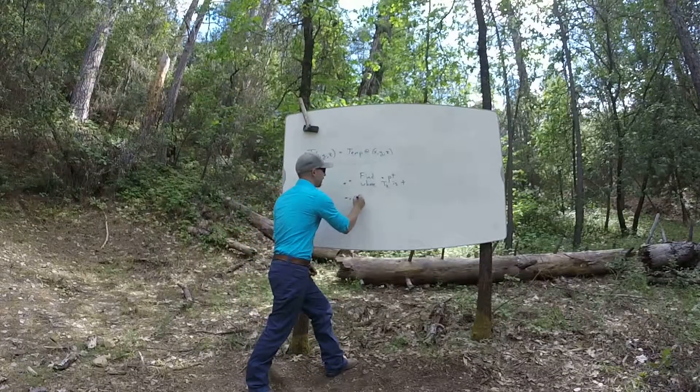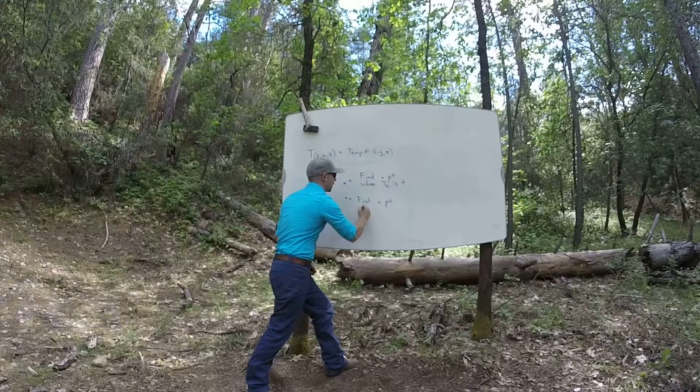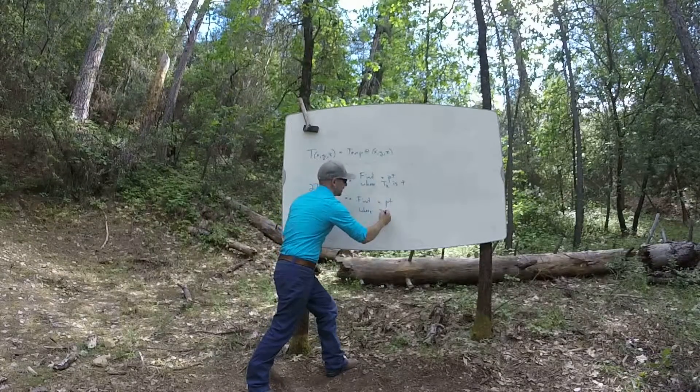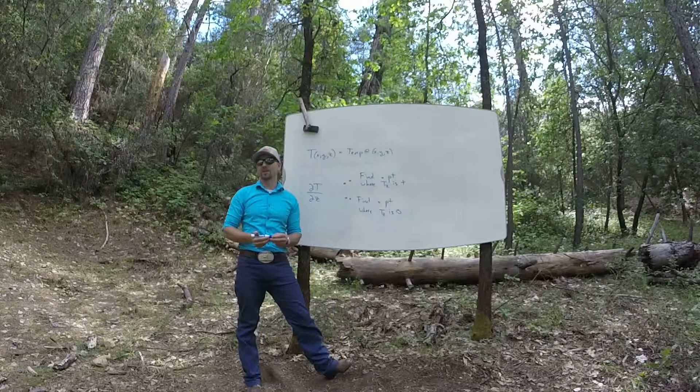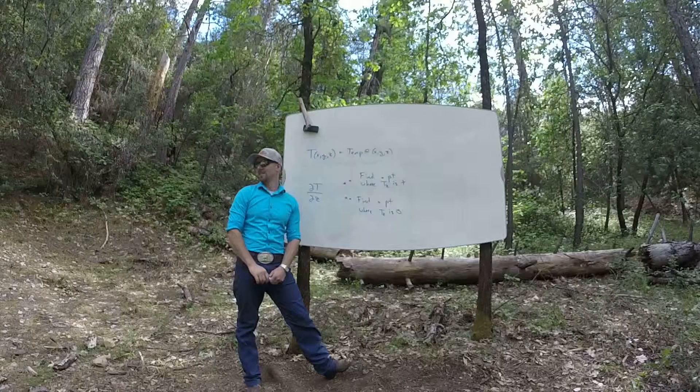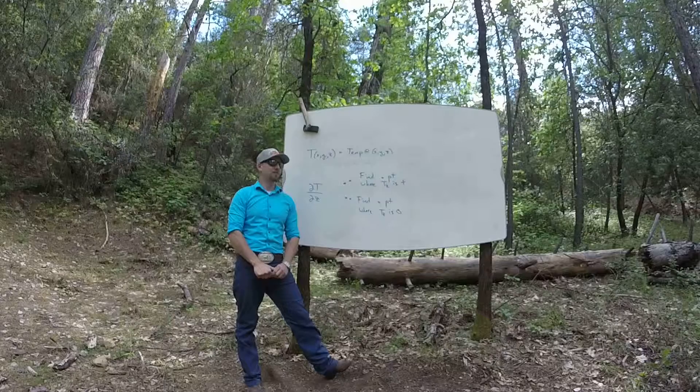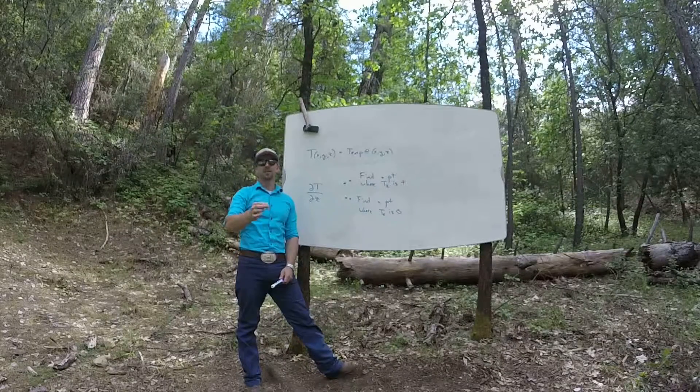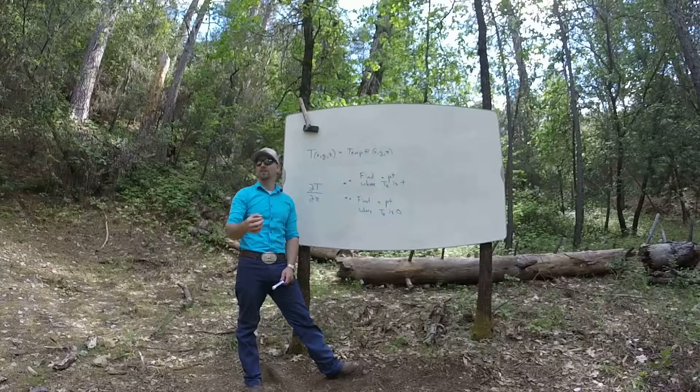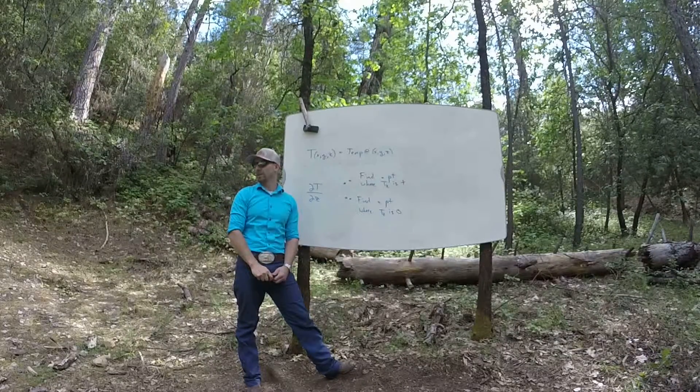So if I wanted to find a spot where, or find a point where tz is zero, what would that mean? What would I be looking for? Yeah, I'd be looking for a spot where temperature is constant in the z direction, right? It doesn't have to be constant in the xy direction, but it would have to be constant in z. Or at least locally constant, right?